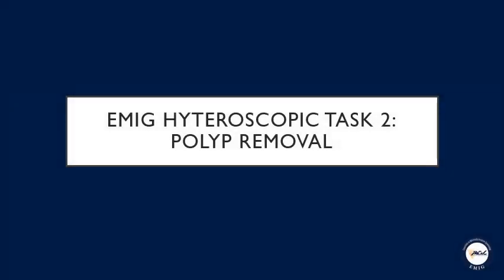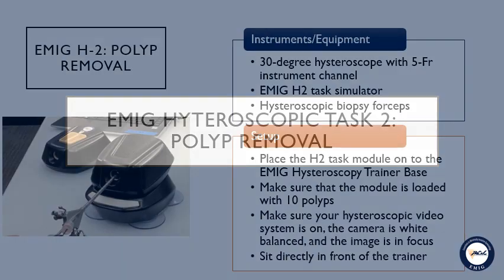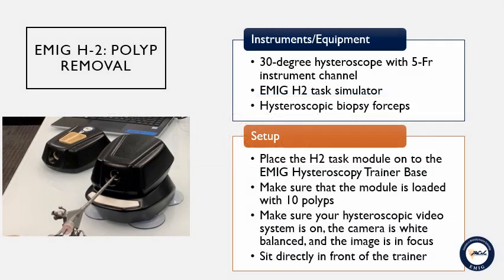Emig Task H2: Polyp Removal. For this task, you will need a 30-degree hysteroscope with a 5 French instrument channel, the Emig H2 task simulator, and a hysteroscopic biopsy forceps.